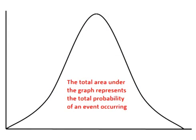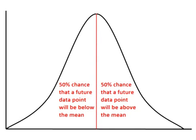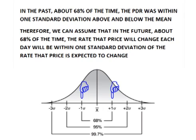The area under a normal distribution curve represents the total probability of an event occurring. Half of the curve is below the mean or expected value, so there's a 50% chance a future data point will be below the expected value, and a 50% chance it will be above. A normal distribution curve follows the empirical rule — the area between one standard deviation below the mean and one standard deviation above the mean contains about 68% of the data. So we can assume that about 68% of the time in the future, the rate of change each day will be within one standard deviation of the expected future rate of change.